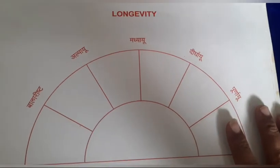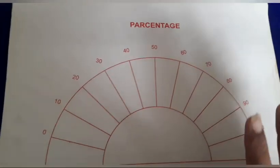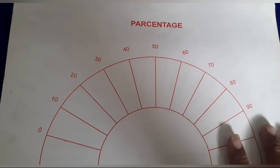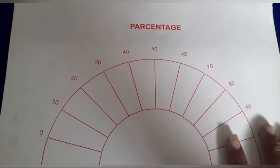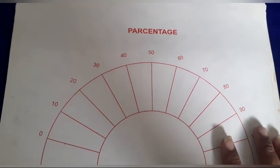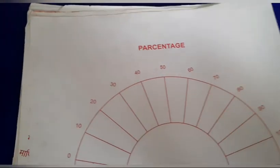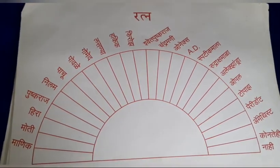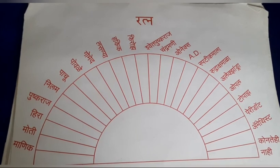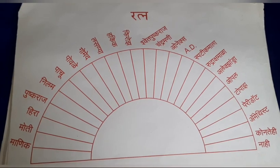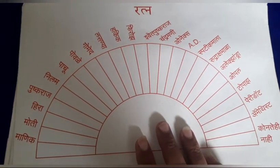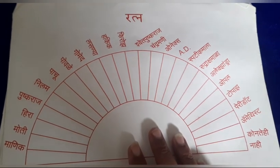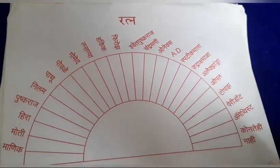Then there is a longevity chart — again I don't like to use this chart. Then there is a percentage chart — how much percentage one can get in an exam can be checked from this chart, but again I avoid it because I don't feel it is right to give predictions to students about their percentage. Then there is a Ratna chart. If a person doesn't have a horoscope, it is difficult to know what kind of gemstone they should wear that will be beneficial to them. Through pendulum dowsing on this chart, we can know which Ratna will be favorable or unfavorable.